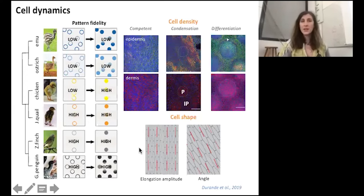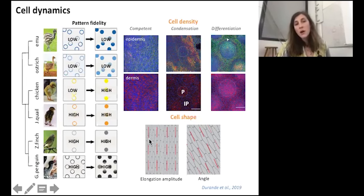Anisotropy is a measure of cell deformation, and it's composed of two elements: the amplitude of cell elongation and its angle of orientation with respect to the embryo midline. During this talk, anisotropy will be represented by red bars.